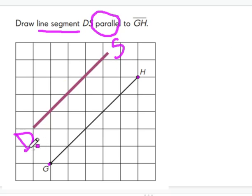And when I'm naming it segment DS, it doesn't really matter which order I name it because these are both endpoints. This could have been the S and this could have been the D, but either way is fine. So now we have segment DS parallel to segment GH. And the keyword is pool because I would like to want to pool today.